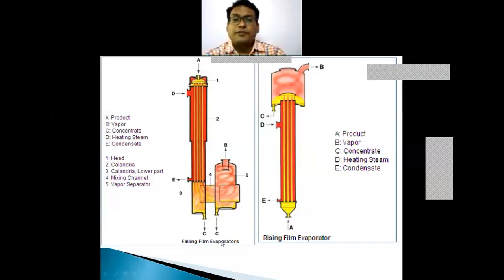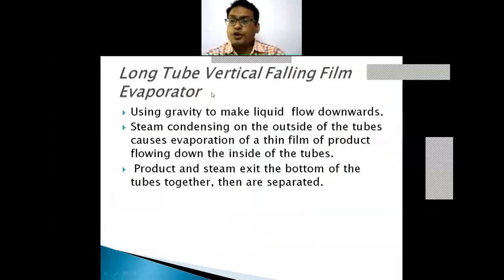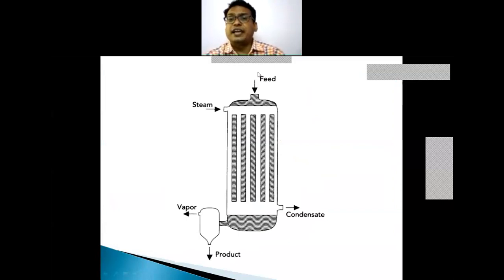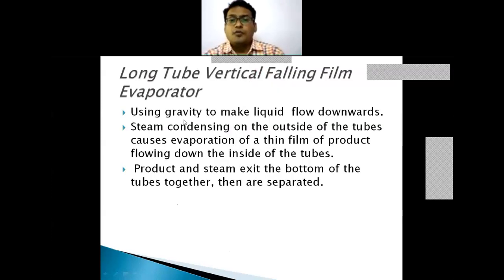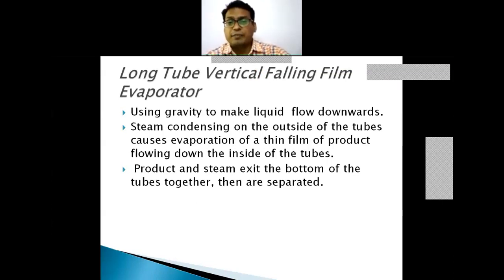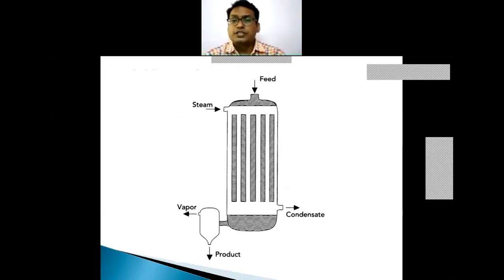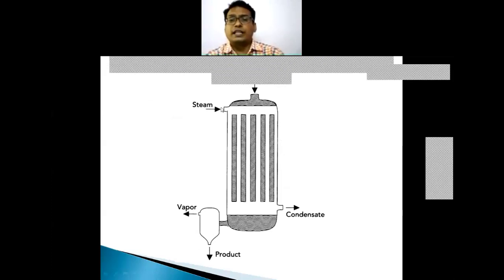In falling film evaporators, the fluid entry is from the top — that is why it is called a falling film evaporator. With the help of gravity, the fluid flows downward. The steam condensing on the outside of the tubes causes evaporation of the thin film of product flowing down inside the tubes. The product and steam exit the bottom of the tubes together — it is a co-current flow, unlike the rising film which is counter-current.